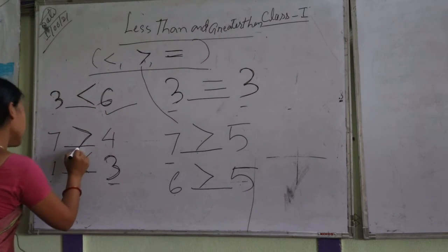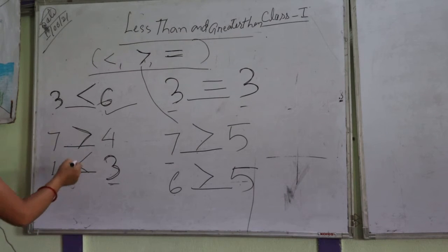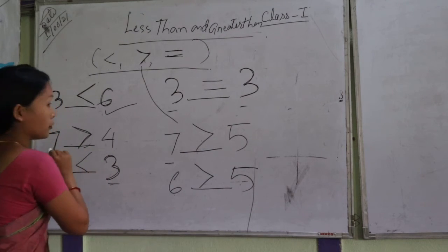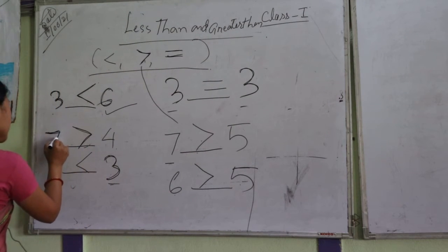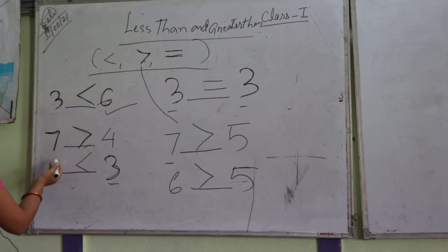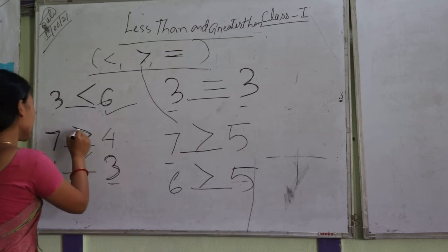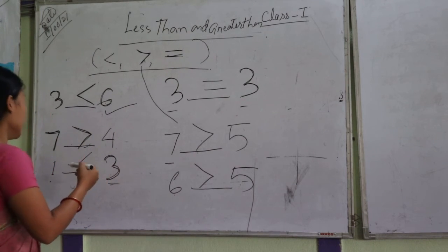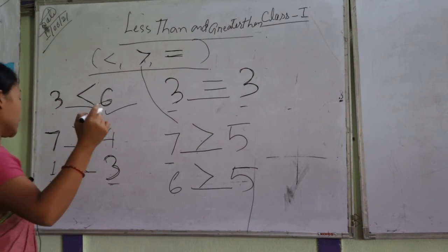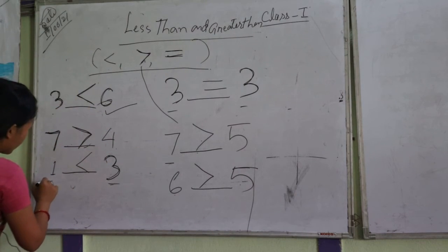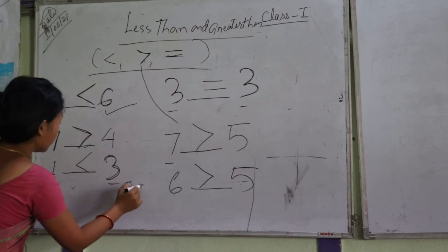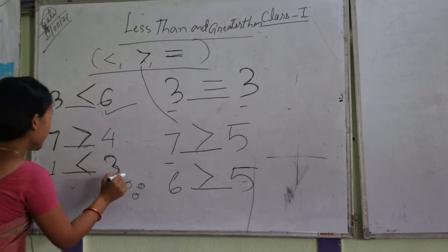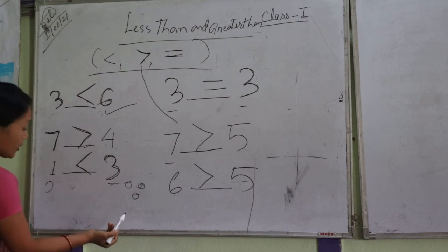It means that this is greater than. Then what happens: seven chocolates — it is more than four chocolates. How much is the case of 7? Seven is greater than four, seven is more than four. Here is 1 — it is only 1 single chocolate. Then here is 3 chocolates. What will happen? That means less than.